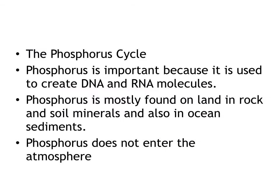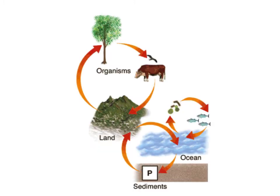The phosphorus cycle isn't going to be as important, but phosphorus is used to create DNA and RNA. It's mostly found in land, rock, or soil, and it does not enter the atmosphere — so it cycles without going into the atmosphere. The phosphorus cycle diagram shows it cycling between living and non-living organisms.